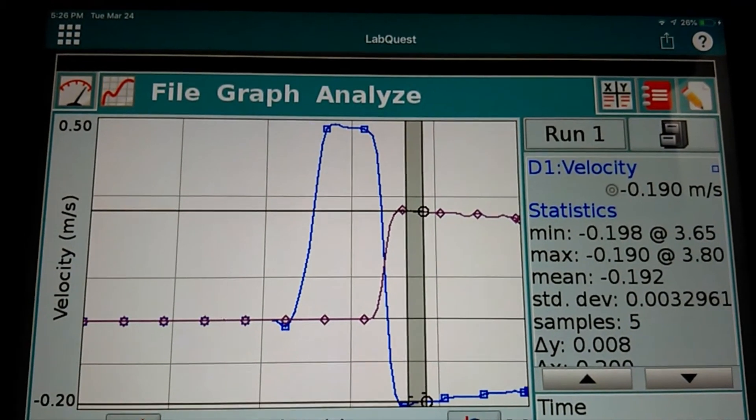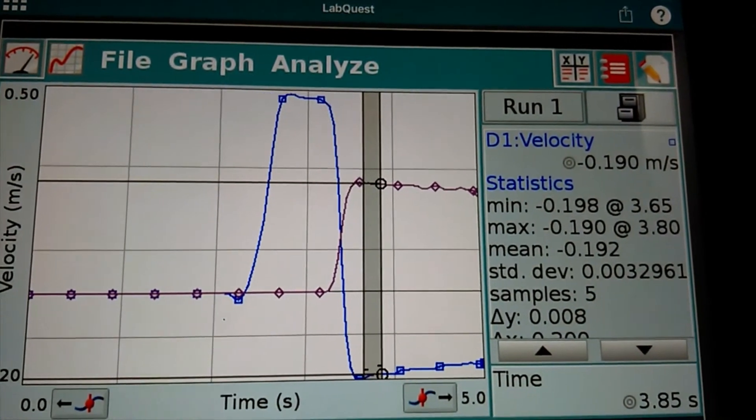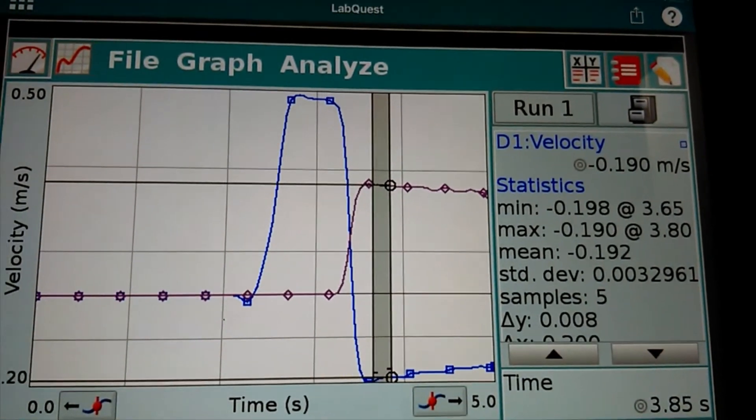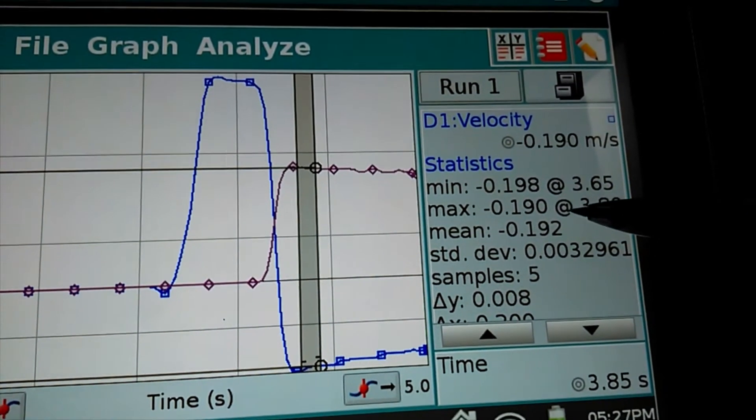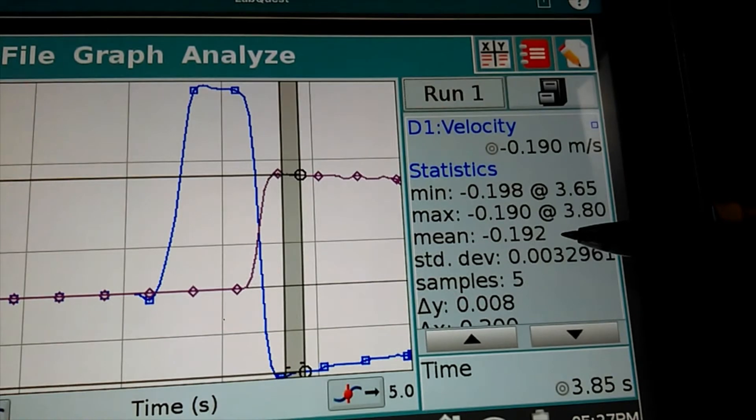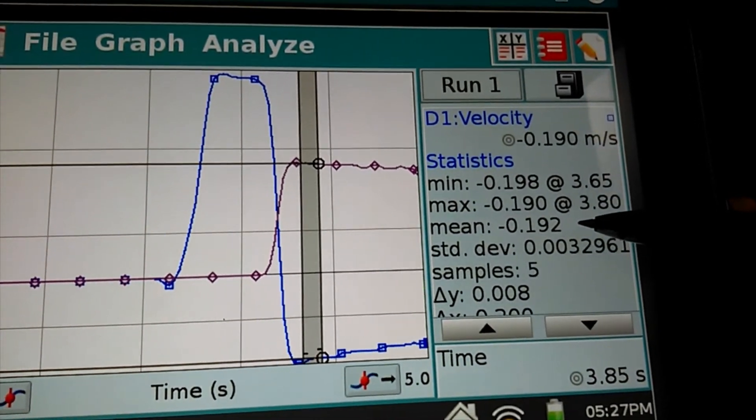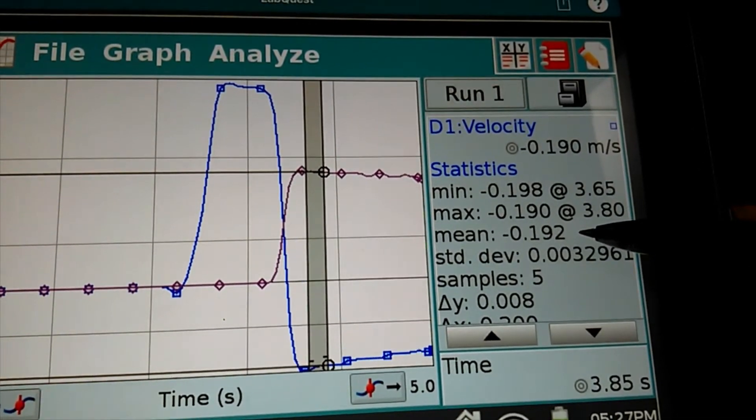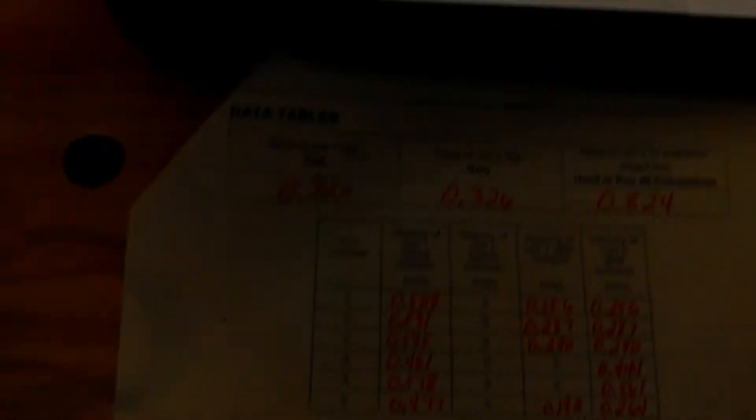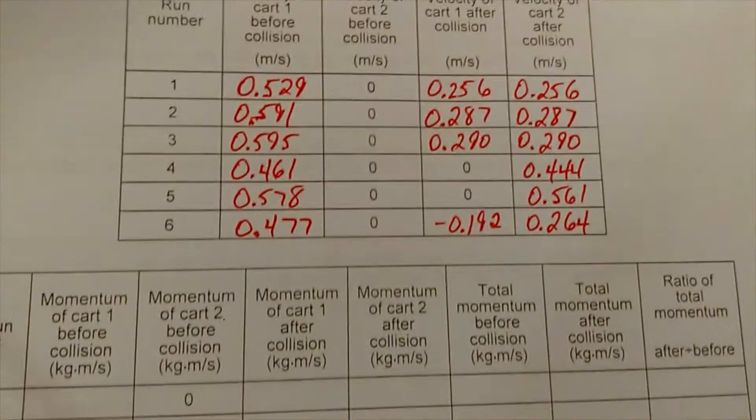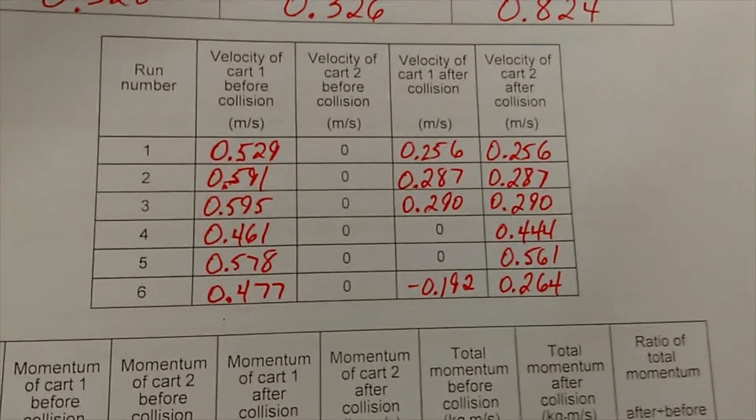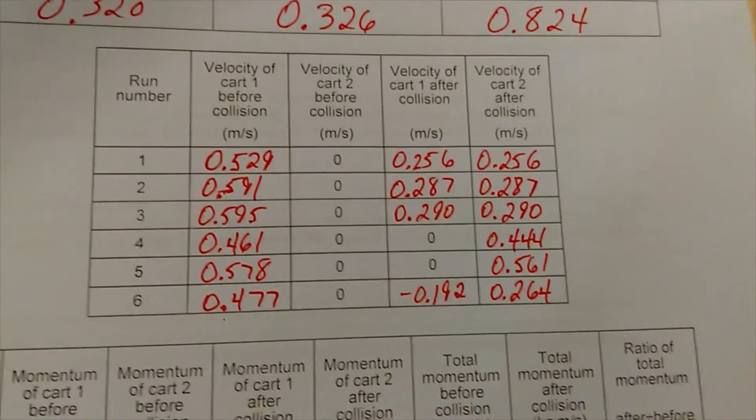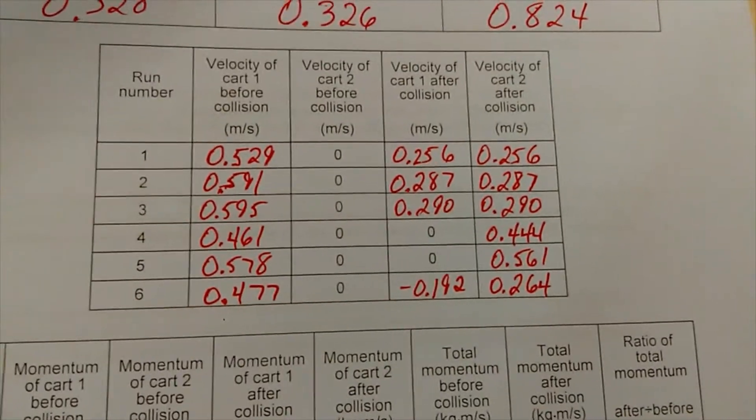I've got run number six up here on the screen. The last thing I did was find that final velocity of car one after the collision. You're seeing that negative velocity, negative 0.192, because that car returned back to the motion encoder where it started. Those results are right here. You've got your original velocity and two different velocities after the collision.